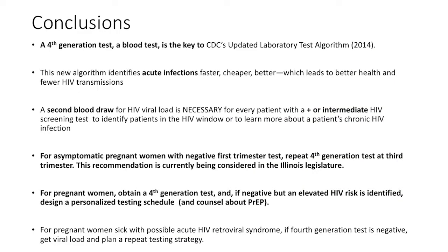In conclusion, the fourth generation test is the real foundation of the new updated algorithm. It's very good at identifying acute infections — cheaper, faster, and better — but not perfect. A second blood draw must be performed for viral load measurement if there's any answer other than absolute negative on the fourth generation. For a pregnant woman sick with possible acute retroviral syndrome and a negative fourth generation test, get a viral load. For asymptomatic pregnant women at risk of acute HIV infection with a negative test, consider further testing including a viral load.